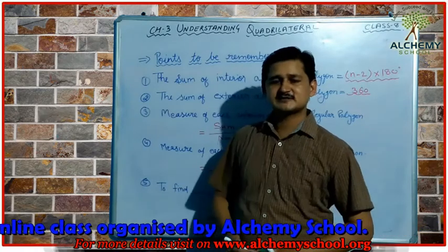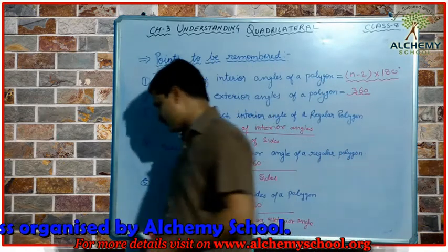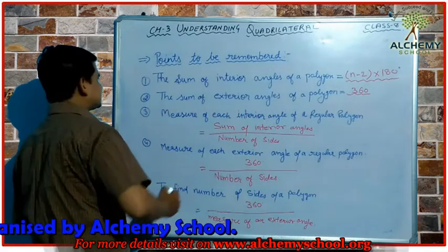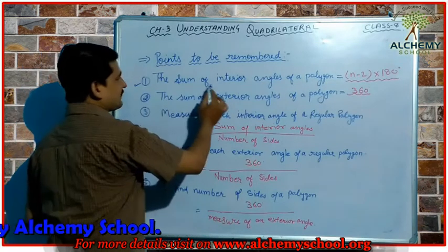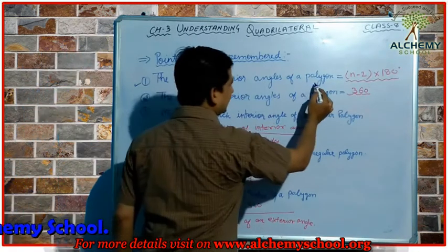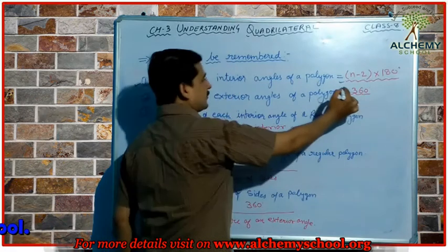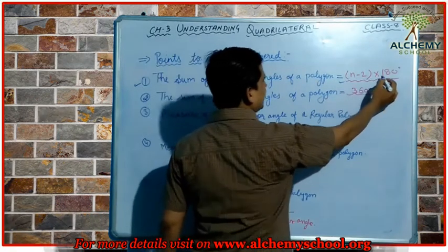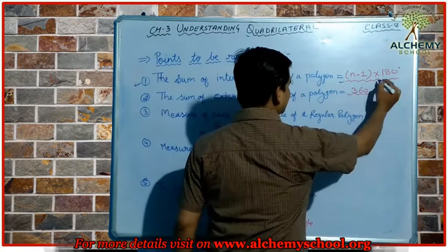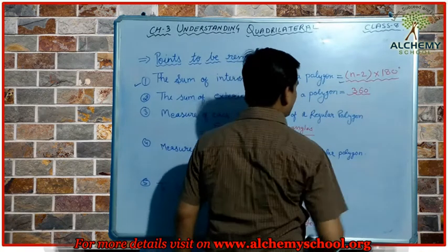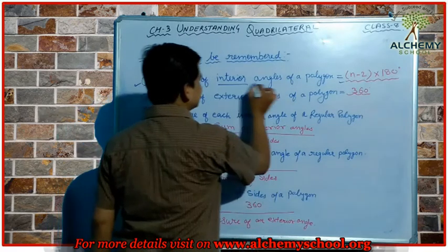Let's revise these points that I have already written on the board. The first point is the sum of interior angles of a polygon, which we can find using the formula: (n − 2) × 180 degrees. We can use this formula to find the sum of interior angles.